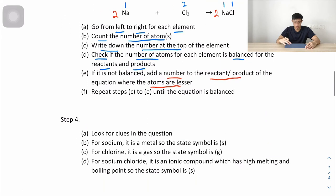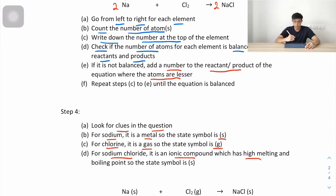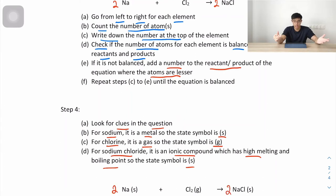Step 4: state symbols. Sodium is a metal, so the state symbol is (s). Chlorine is a gas, so (g). Sodium chloride is an ionic compound with a high melting and boiling point, so its state symbol is (s). The final balanced equation is 2Na(s) + Cl₂(g) → 2NaCl(s).